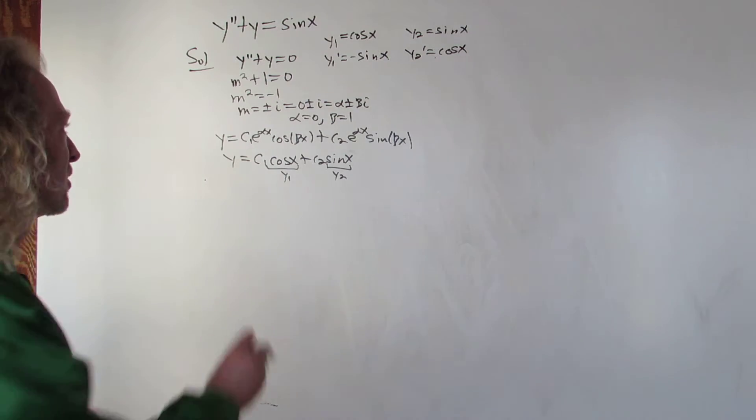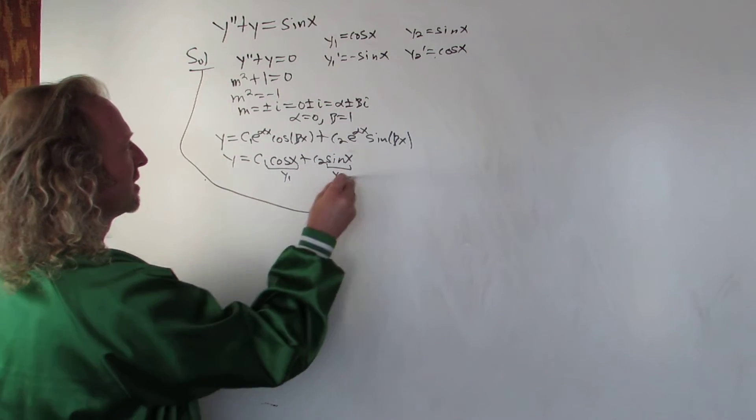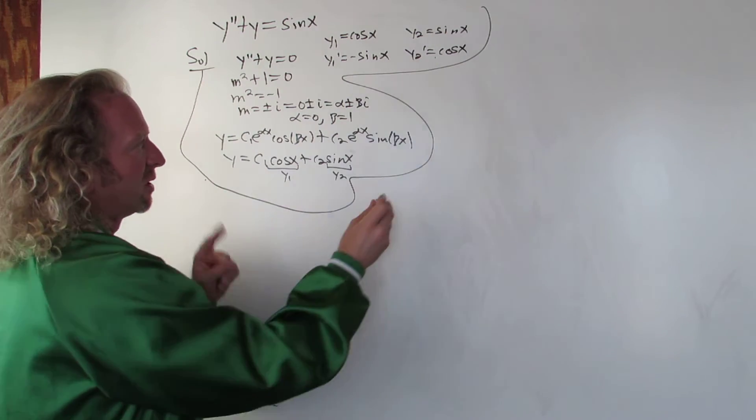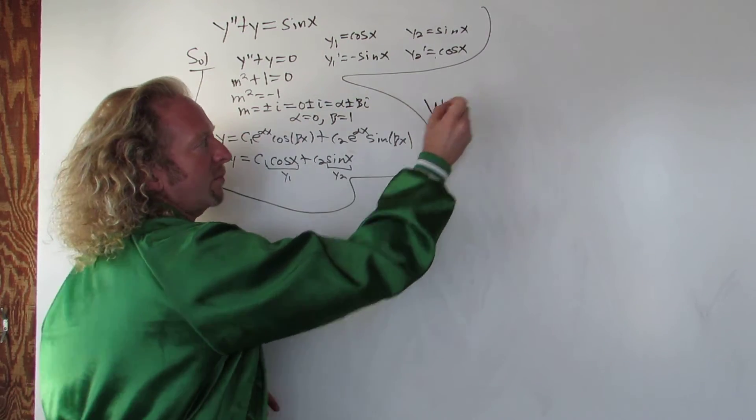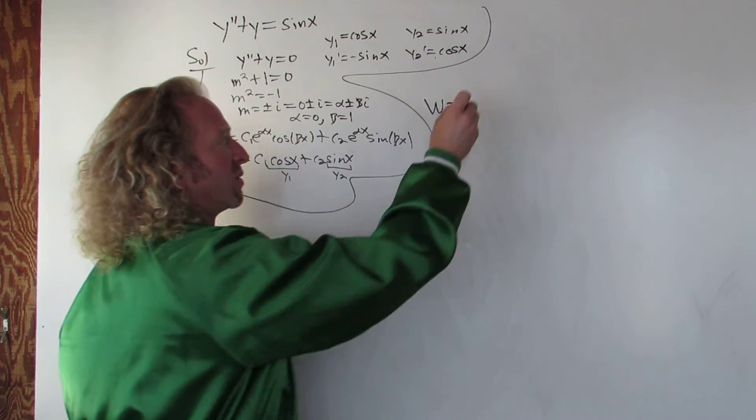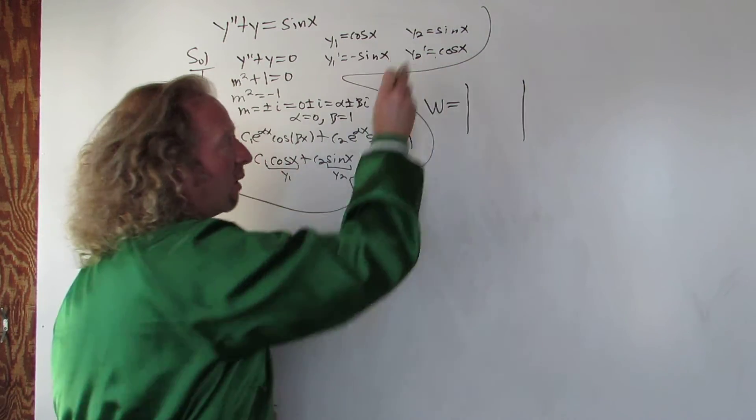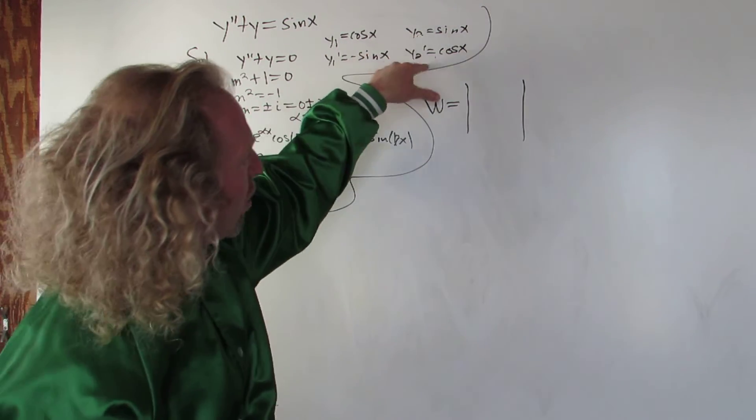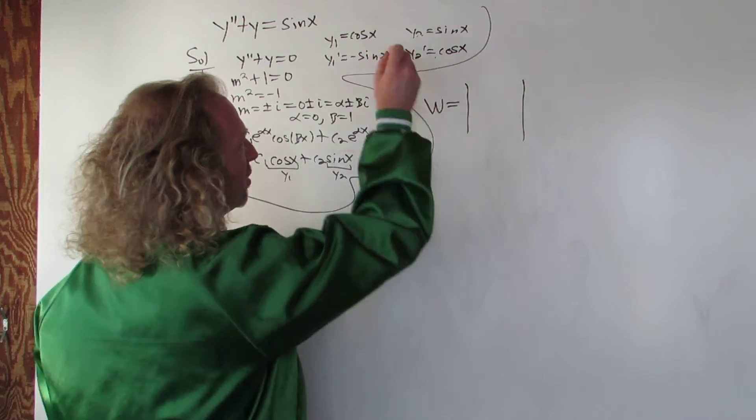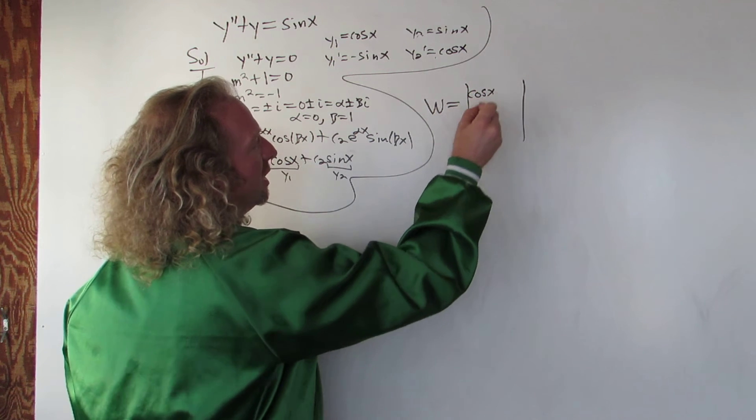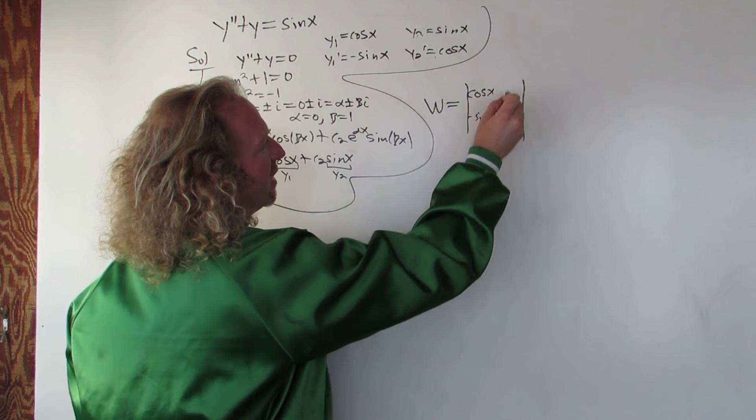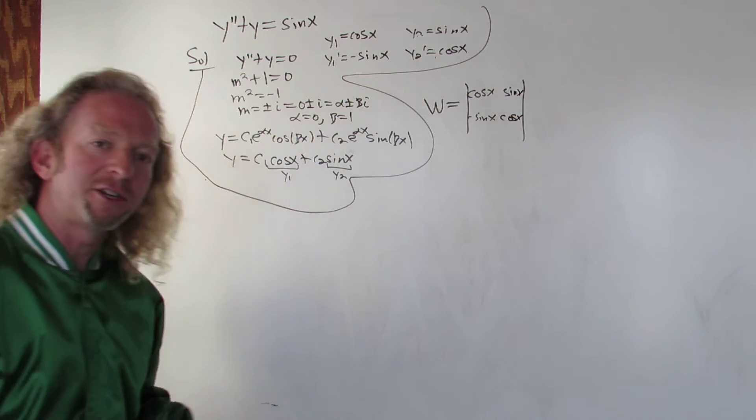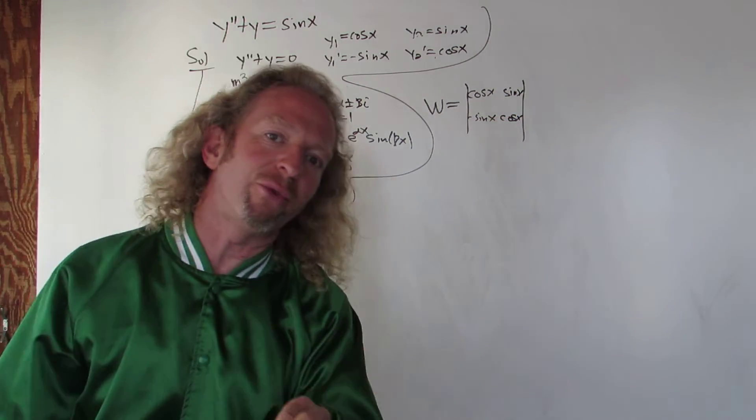Step 1, variation of parameters, you solve the homogeneous one, you find the y's, you take the derivatives. Step 2, you compute the w's. I'm going to do this just to compartmentalize the problem. So the next step is to find the w's. So w is the Wronskian of y1 and y2. Basically it's y1, y1 prime, y2, y2 prime. You just put them inside. Cosine x, negative sine x, sine x, cosine x.